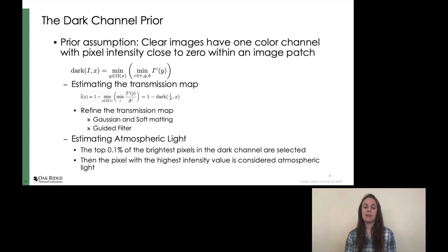The dark channel prior is a method developed by He et al. that estimates the atmospheric light and the transmission map. It does this by noticing that clear images have at least one color channel with pixel intensity close to zero within an image patch. They define the dark channel as shown in this first equation here. This is used to estimate the transmission map, but because this is not smooth, the transmission map may cause the final image to have artifacts. Thus it becomes necessary to refine the transmission map before using it in the haze equation.